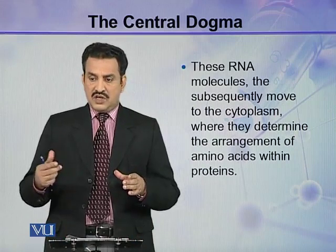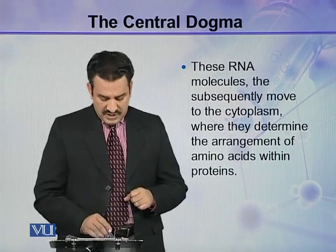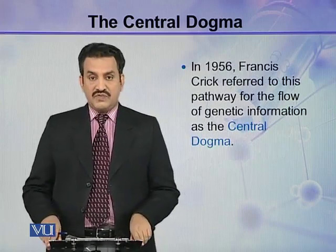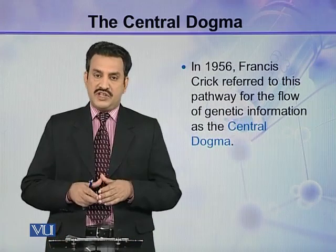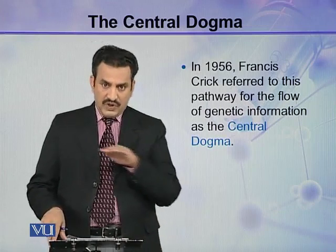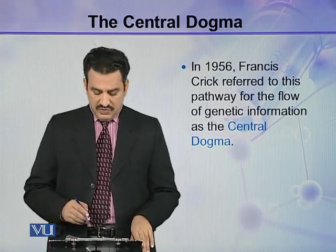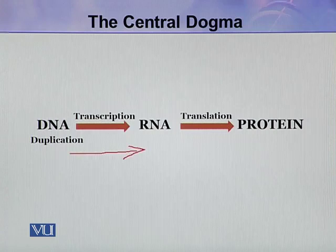After synthesis, these RNA molecules come to the cytoplasm where synthesis of protein takes place. In 1956, Francis Crick referred to this pathway for the flow of genetic information as the central dogma. Information flows from DNA to RNA during the process of transcription, and then from RNA to proteins during the process of translation.